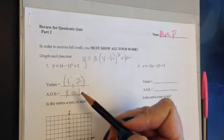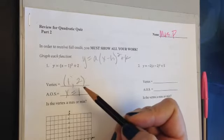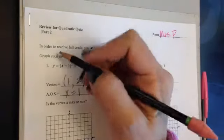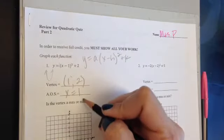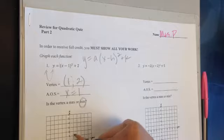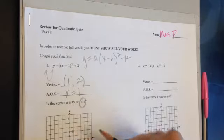Is the vertex going to be a maximum or a minimum? The vertex, in this case, the A value is a positive 1. This parabola is going to open up, so that vertex is going to sit at a minimum. 1 and 2 is going to be the minimum.